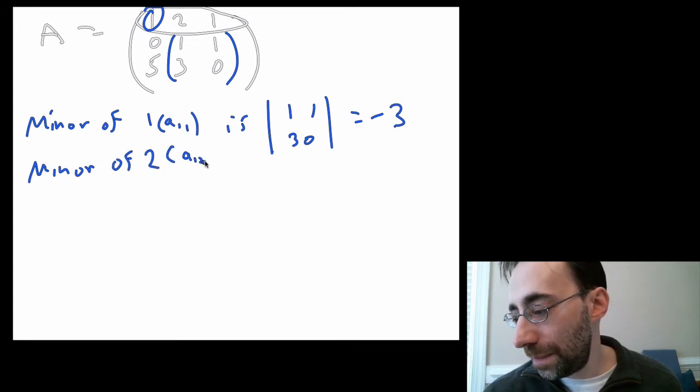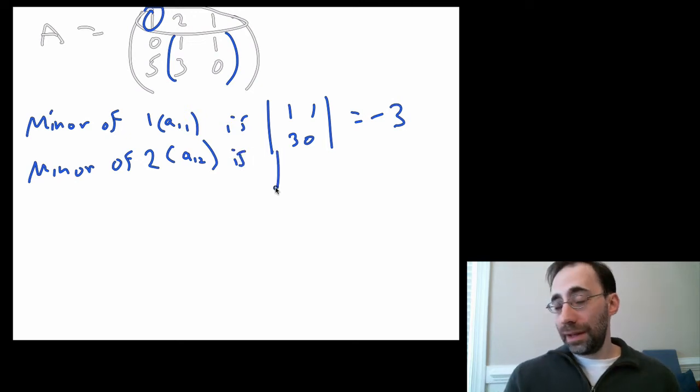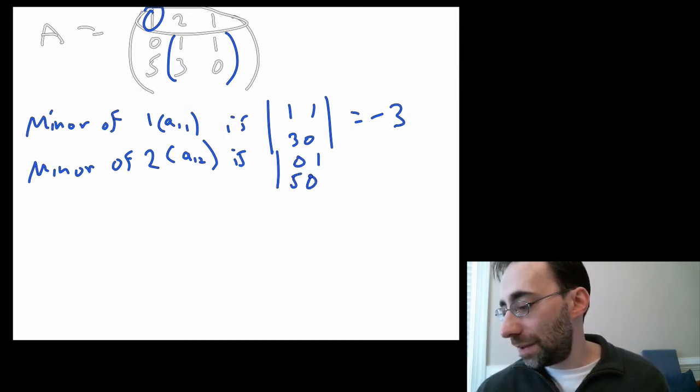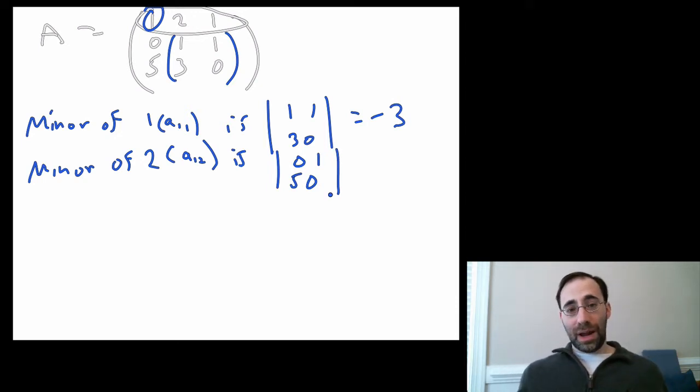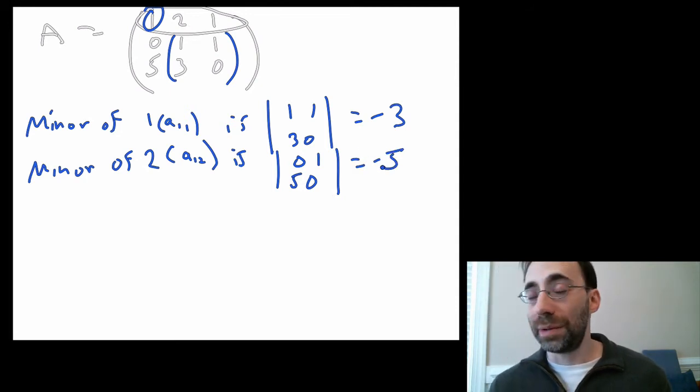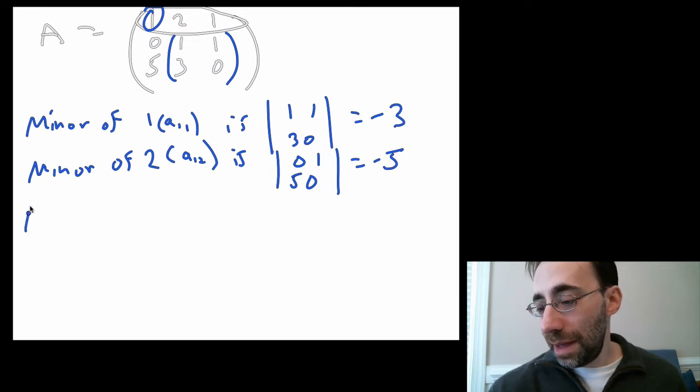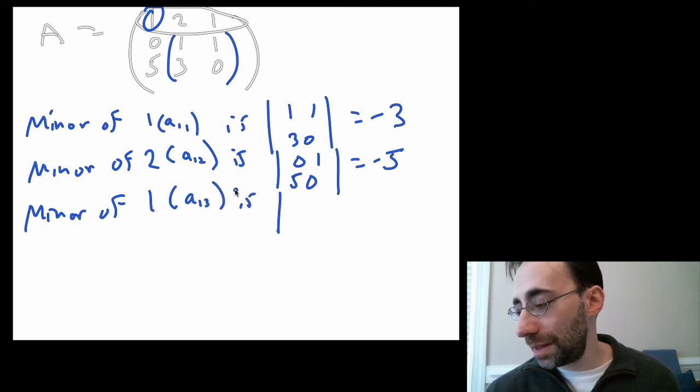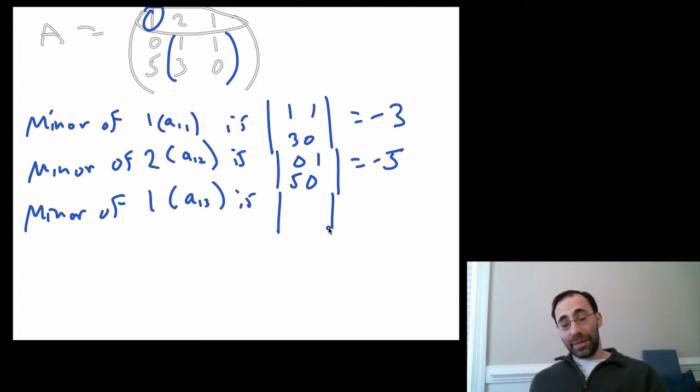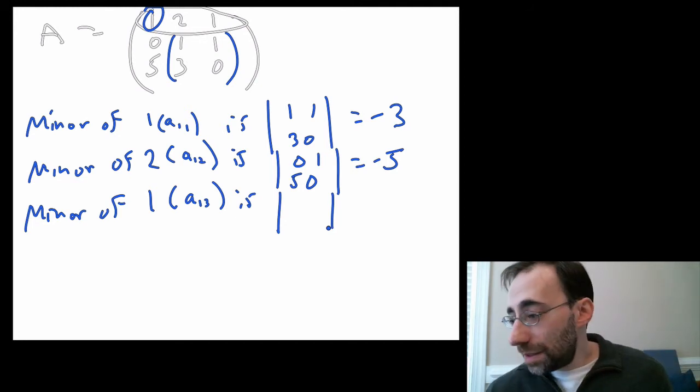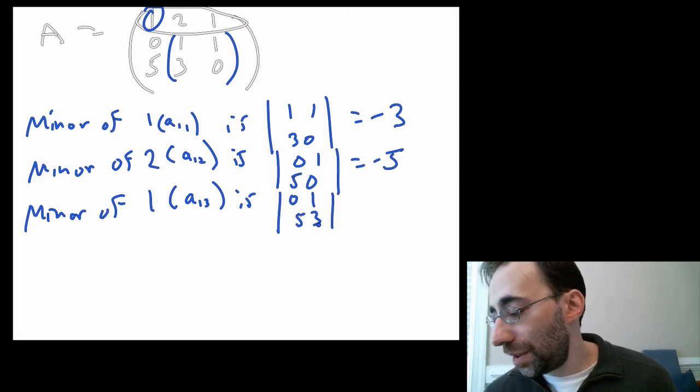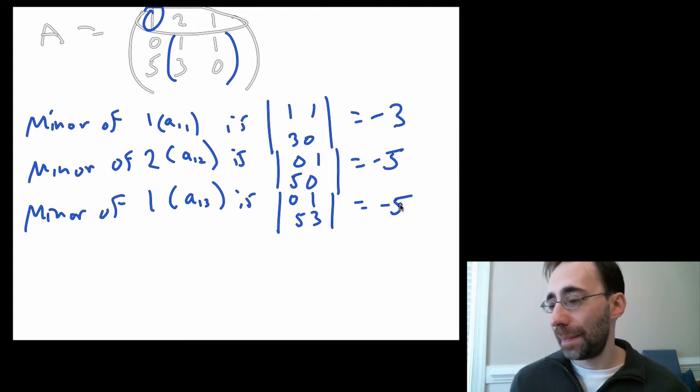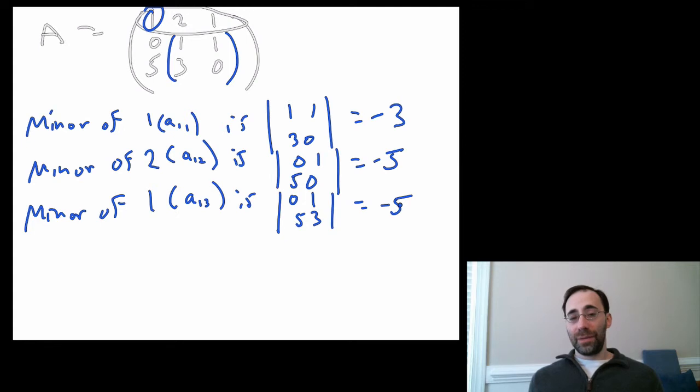The minor of 2, which here is A12, is going to be what you get if you remove the first row and the second column, which leaves you with 0, 1, 5, 0. 0 times 0 is 0. 1 times 5 is 5, so it's 0 minus 5 is negative 5. And finally, the minor of 1, now we're talking about A13, is the determinant of the matrix you get, the submatrix for that element, which is what you get if you remove the first row in the last column. So it's 0, 1, 5, 3. 3 times 0 is 0. 1 times 5 is negative 5, so it's 0 minus 5. And you get negative 5. So that takes care of the minors of this thing.